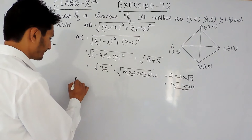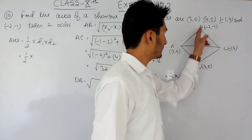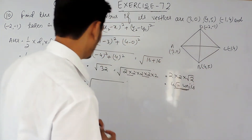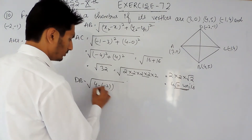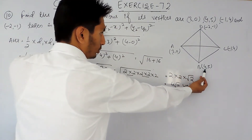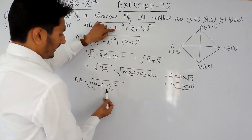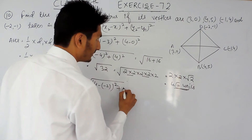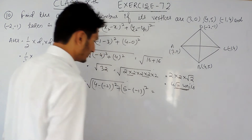Now the second diagonal is DB. Using the same distance formula, with D as (x1, y1) = (-2, -1) and B as (x2, y2) = (4, 5): we compute (4 minus (-2)) whole square plus (5 minus (-1)) whole square. The two negative signs give plus, so it becomes (4 plus 2) whole square plus (5 plus 1) whole square.